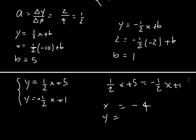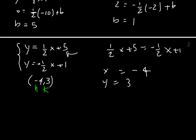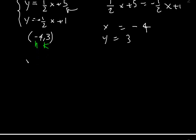Solving for y, I take negative 4 and plug it back into one of the equations — the top equation. So 1 half times negative 4 is negative 2. Negative 2 plus 5 is 3. So the point of intersection is at negative 4, 3. This gives me my h and k. So the equation is y equals negative 1 half absolute value of x minus negative 4, so plus 4, plus 3.